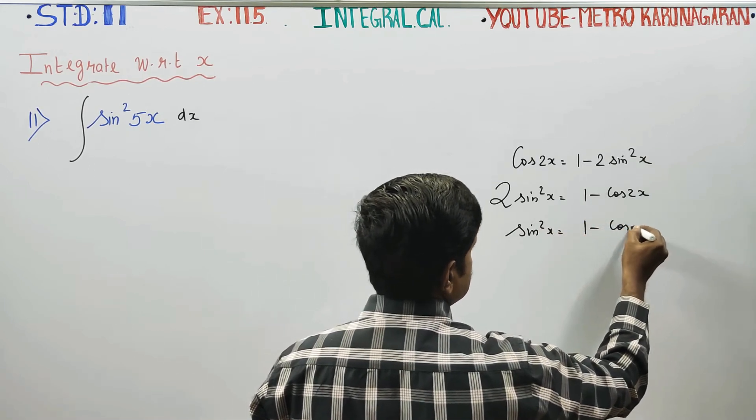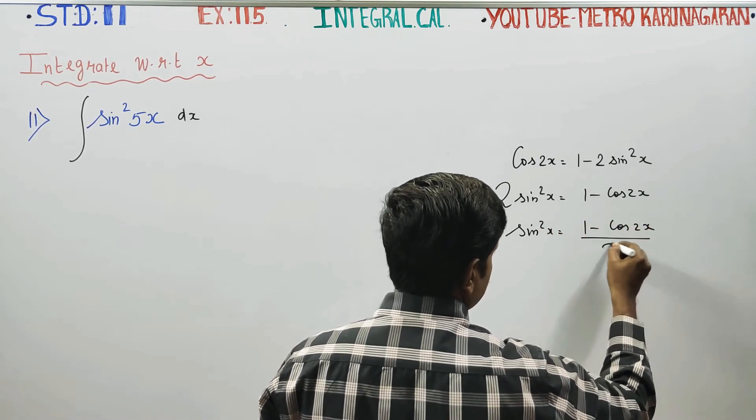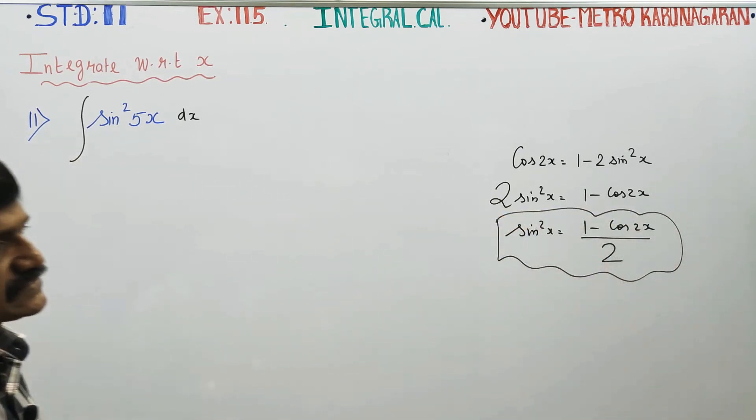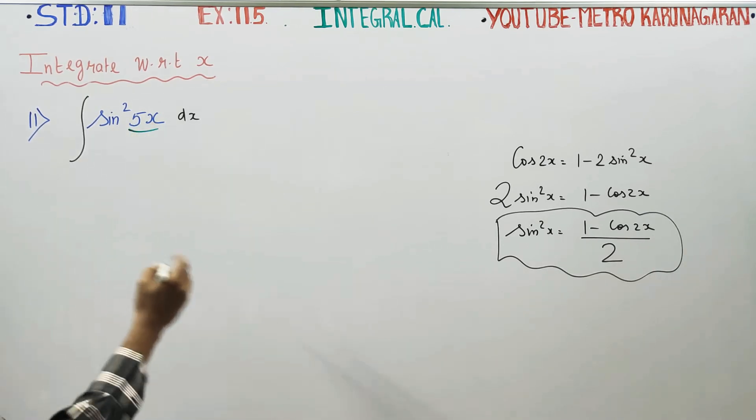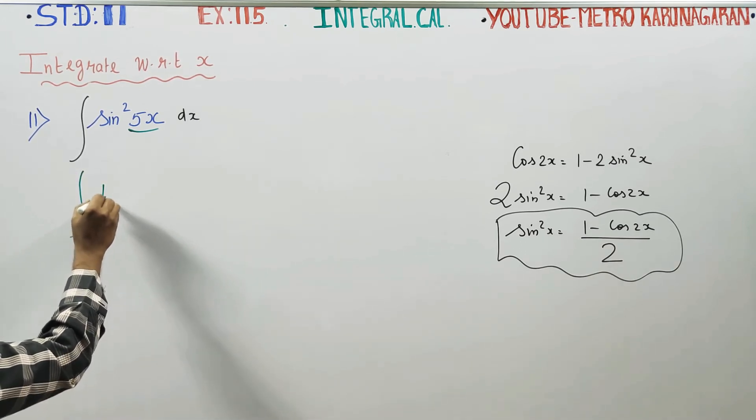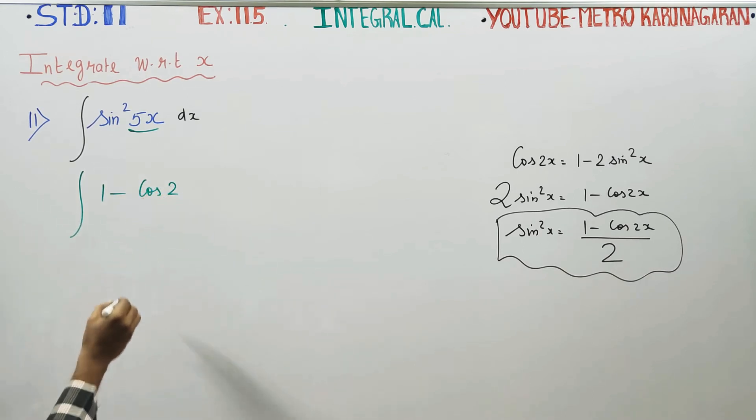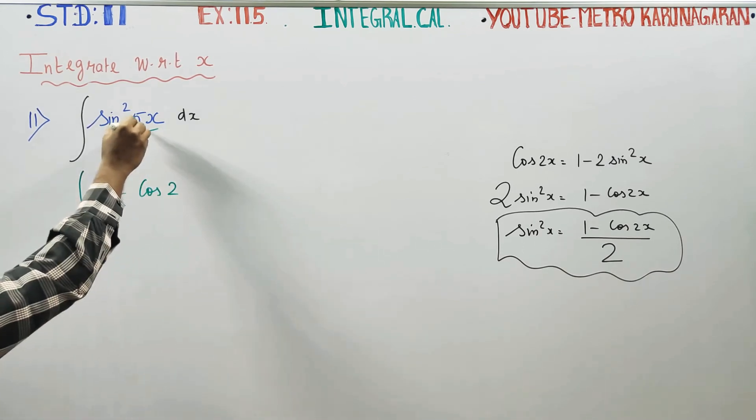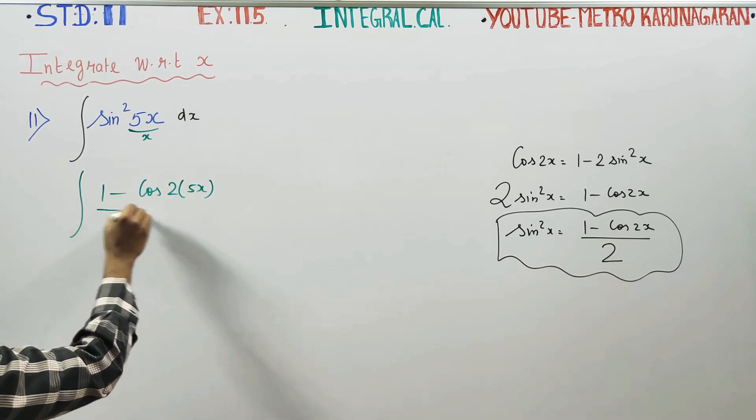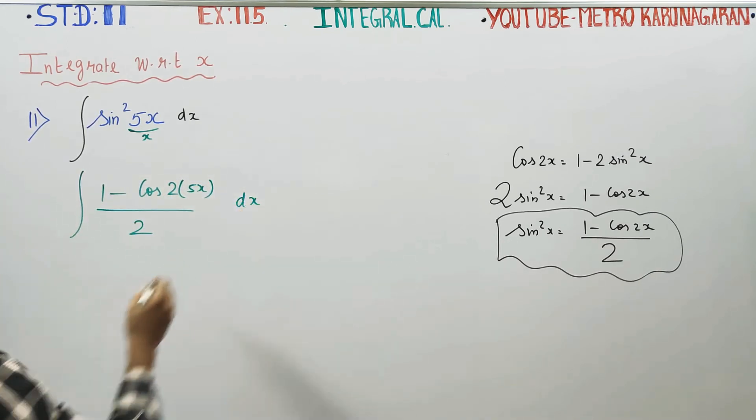Sin square x is equal to 1 minus cos 2x by 2. Integration 1 minus cos 2 times, instead of x you have to use 5x. You have to use 5x. That's all. O divided by 2 into dx. The game is over. Correct in the formula on the panna kudadh.